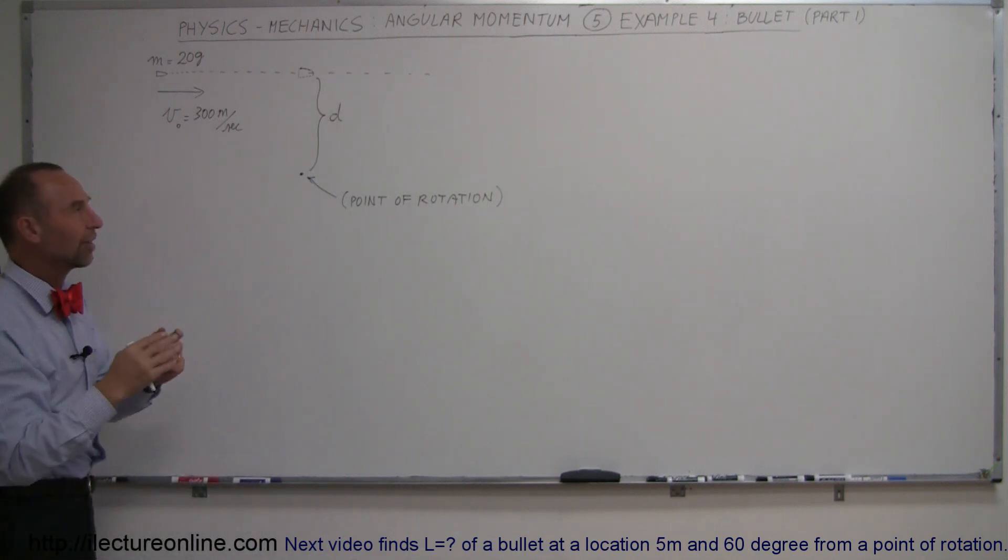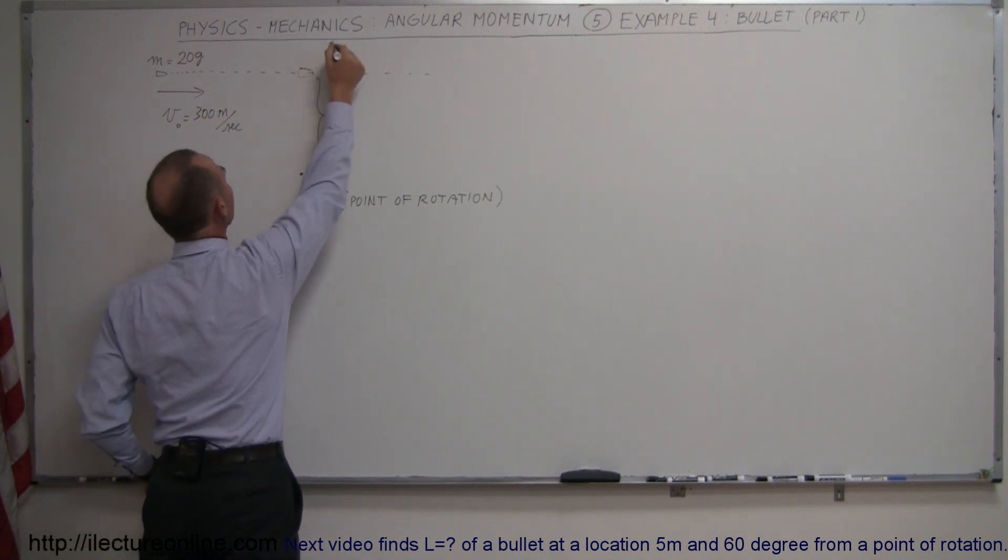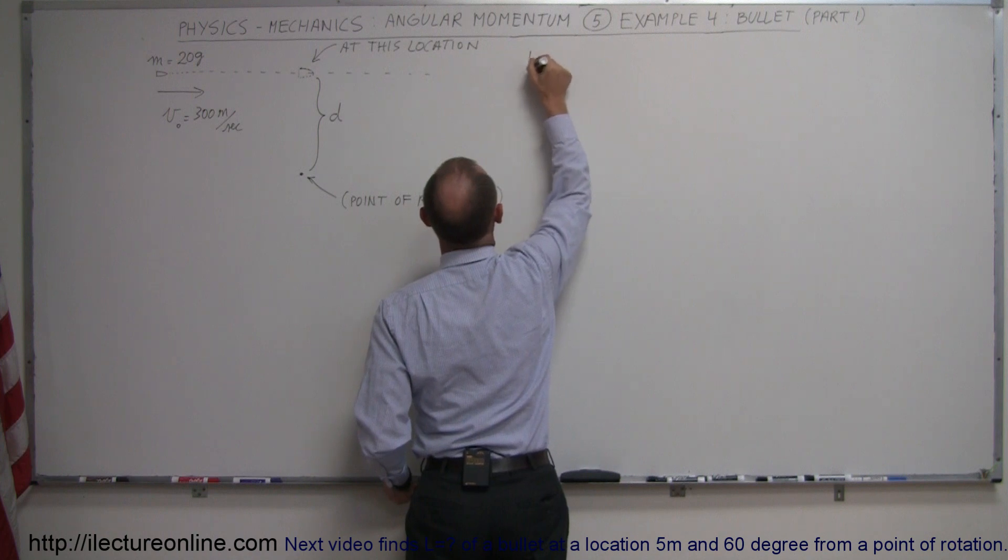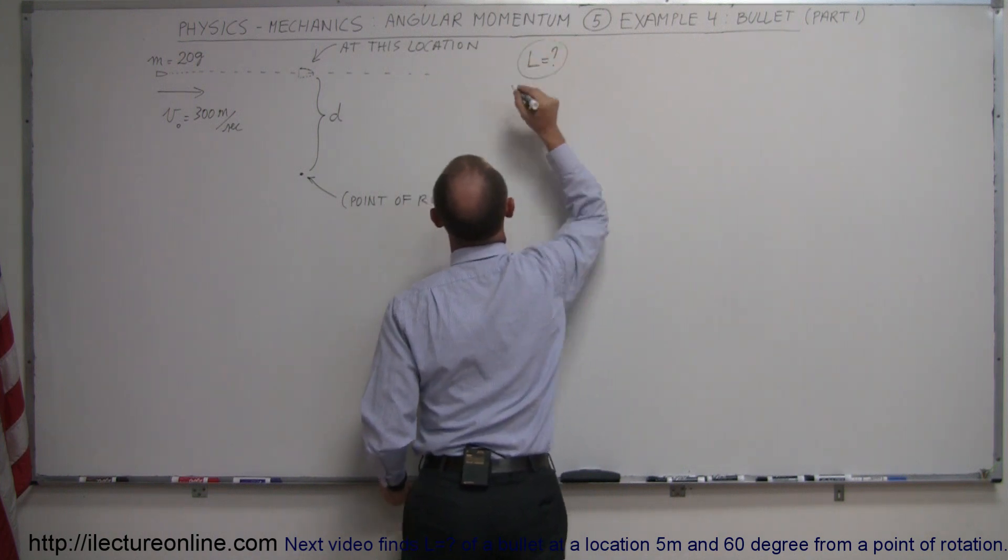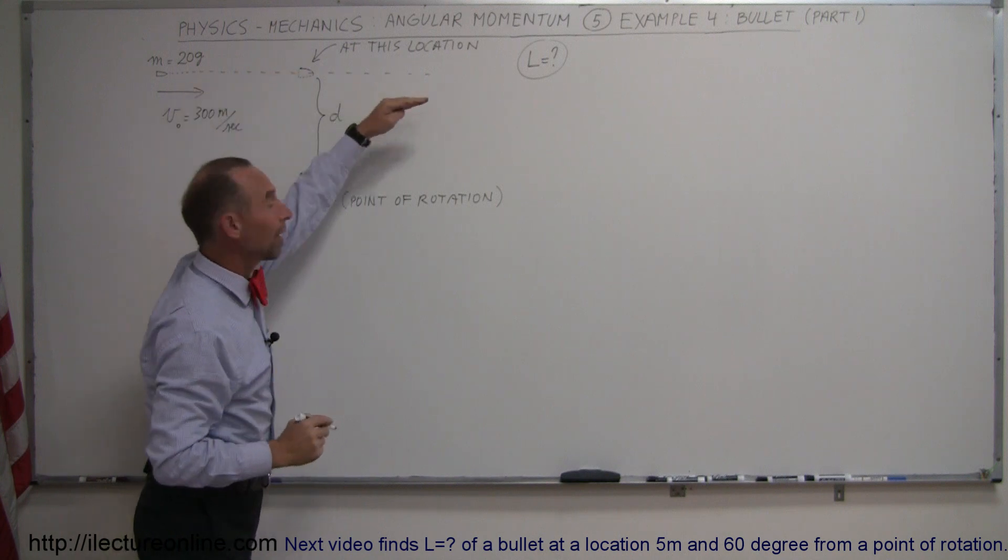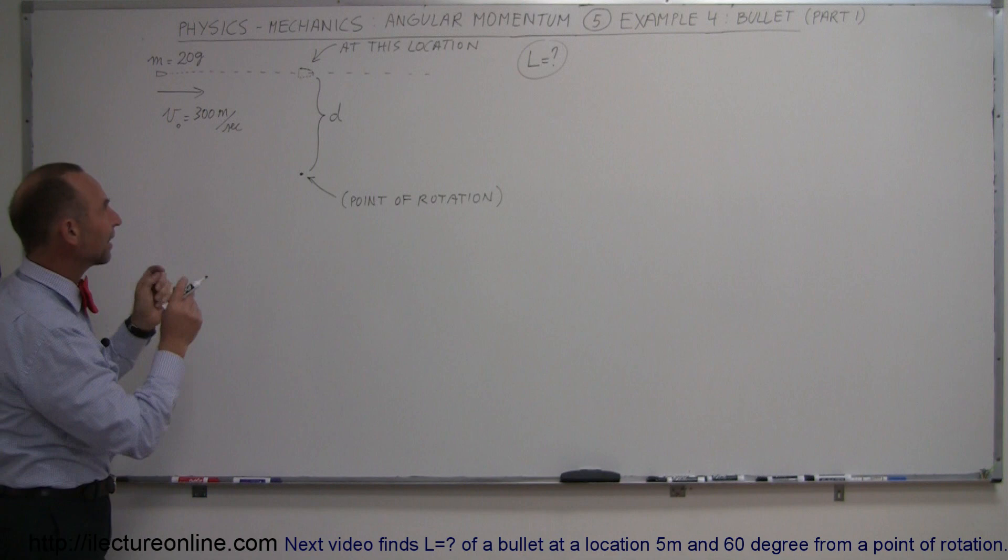That's going to be our first example with the bullet, part one. What would be the angular momentum of the bullet at this location? And so the question is L equals question mark. We're going to wait until the bullet has reached this point on its way past. What is the angular momentum? And the way you look at it is you can say at that very moment, if you took a snapshot of it,